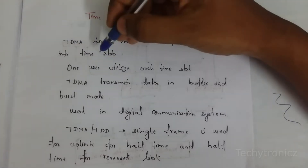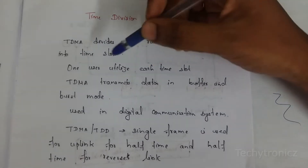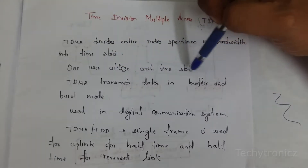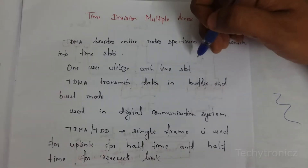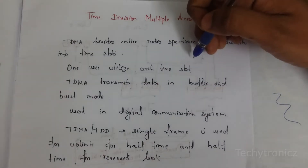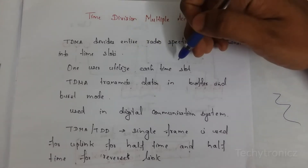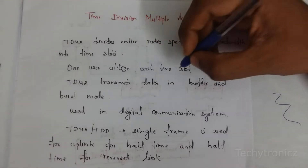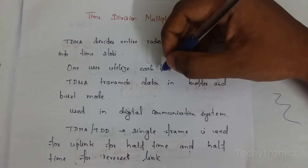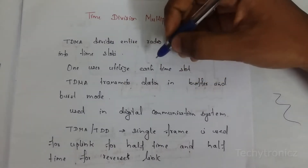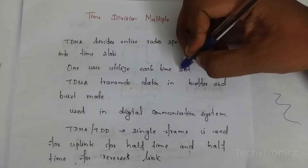Each user is assigned one time slot. One user utilizes each time slot, so that interference or collision is avoided. Each user shares information only within their assigned time slot. That is time division multiple access.